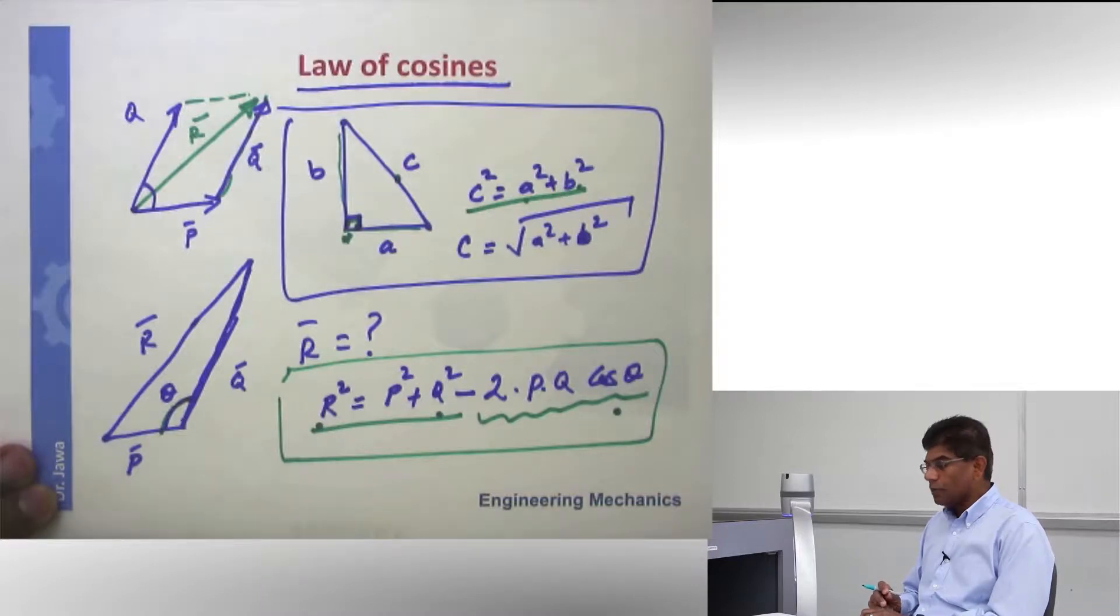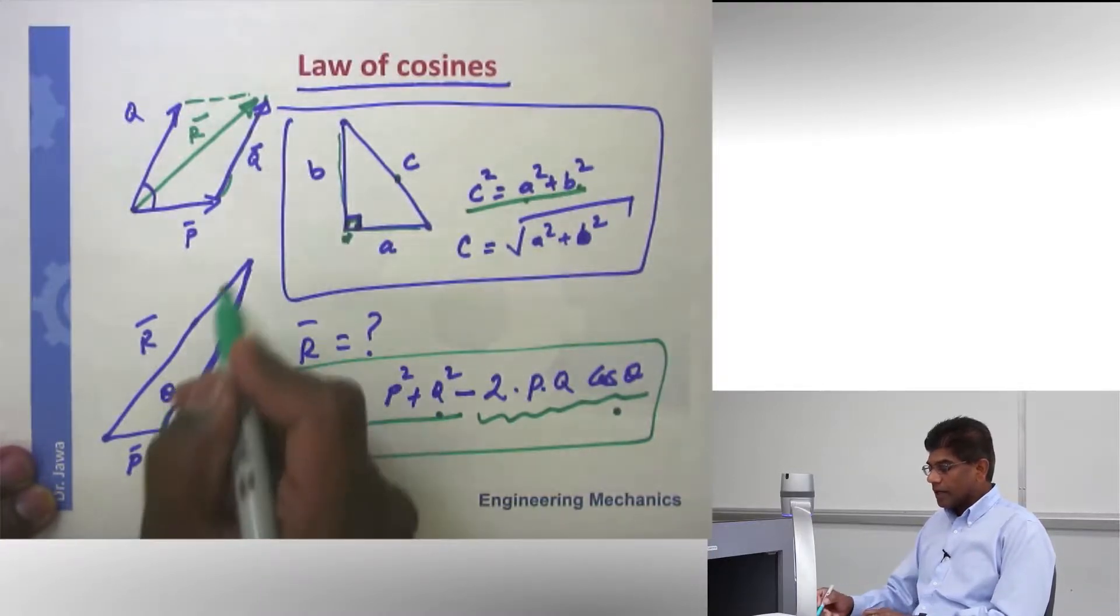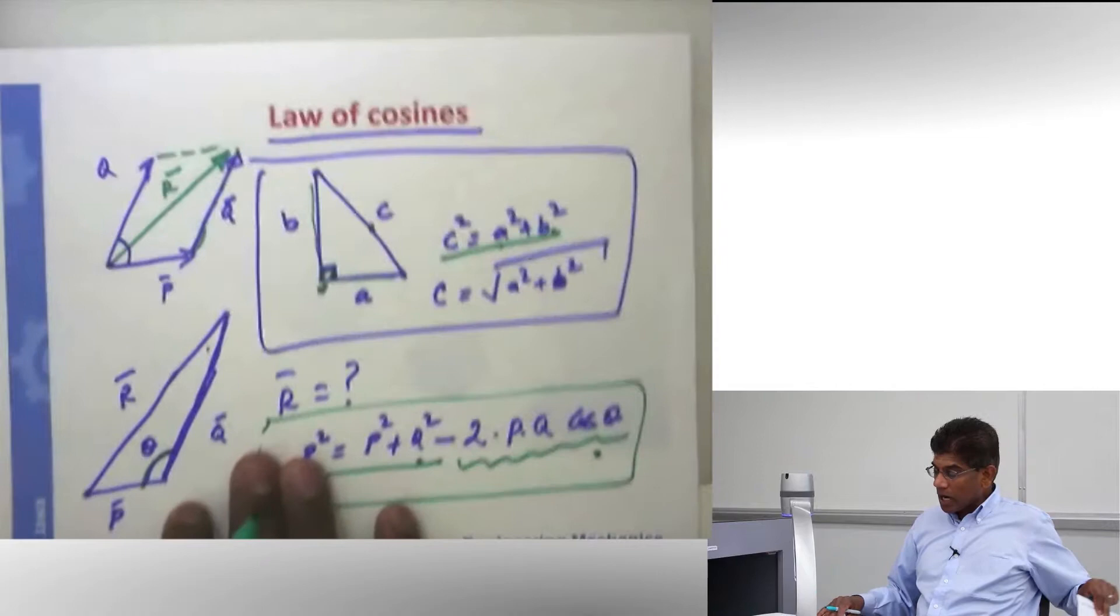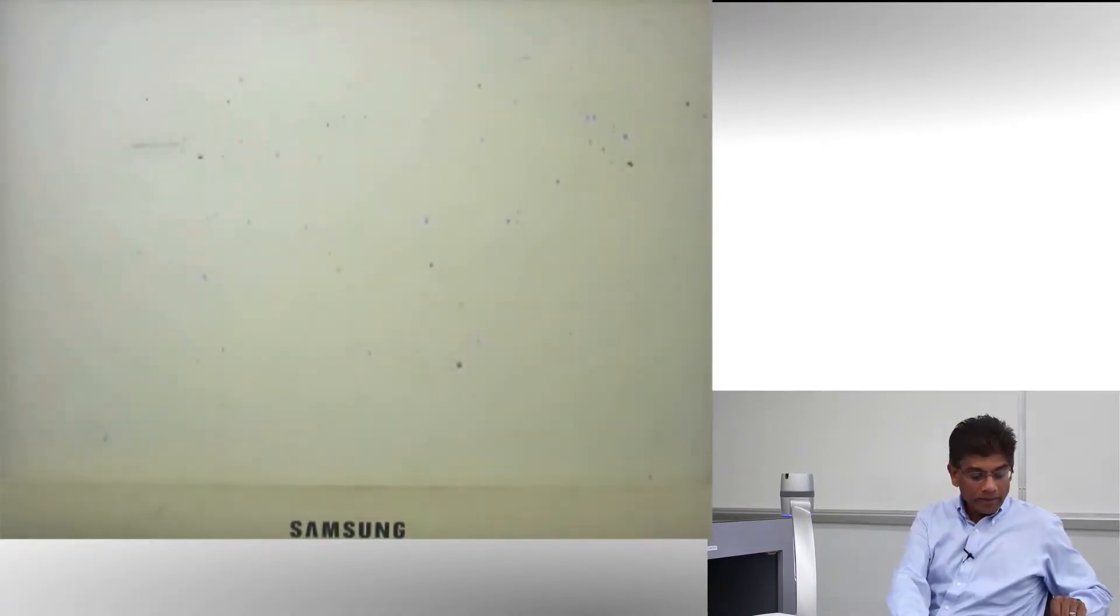There is one more law that I want to talk about before I do an example. It is known as the law of sines. Again it involves all three sides of the triangle and the angles. Let's take a look at the law of sines and what it looks like.